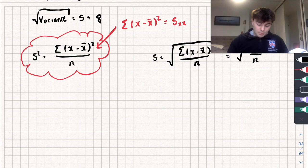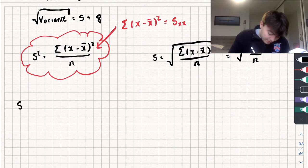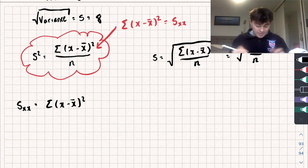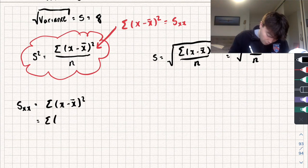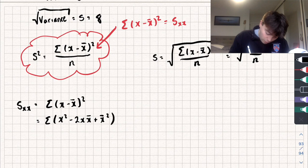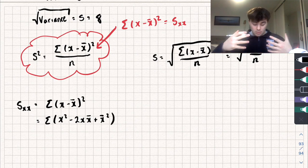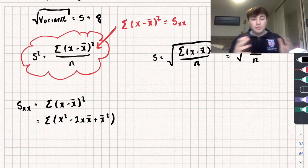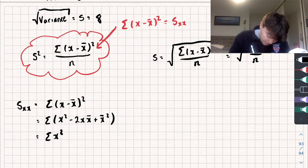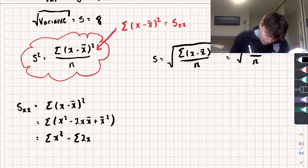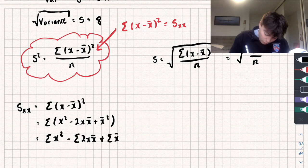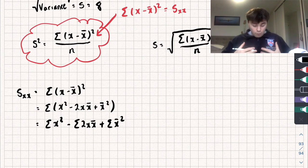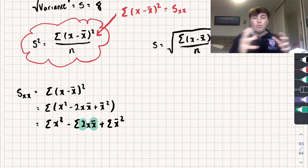Now let's look at an alternative formula. Sxx equals the sum of (x minus x-bar) squared. If we expand that, we get the sum of x-squared minus 2x times x-bar plus x-bar squared. We can then separate our sigma sums under addition and subtraction to get: the sum of x-squared, subtract the sum of 2x times x-bar, plus the sum of x-bar squared.